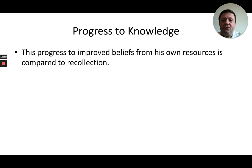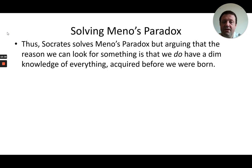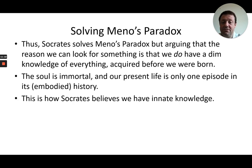This progress to improved belief from the slave boy's own resources is compared to recollection. In each case, someone reasons from his present beliefs to an answer which seems beyond him at the start, until he realized that he had the resources to find it all along — that's what Pythagoras did, without the luxury of somebody asking him questions. So, according to Socrates, Meno's paradox is solved: the reason we can look for something is that we do have a dim knowledge of everything acquired before we were born. The soul is immortal, and our present life is only one episode in its embodied history as it tries to make it back to a complete state of knowledge when it inhabits the realm of forms.